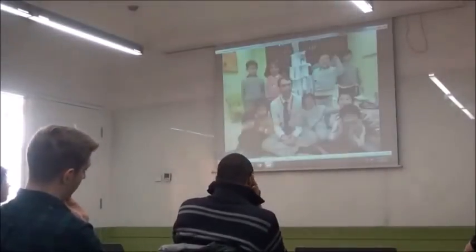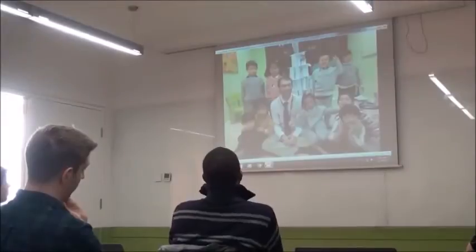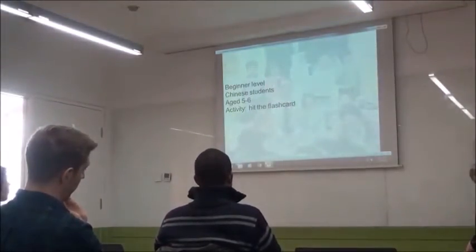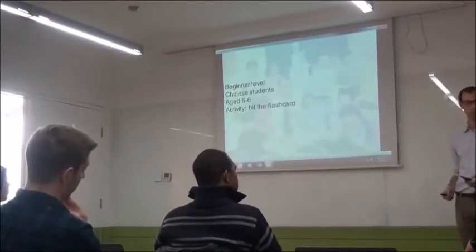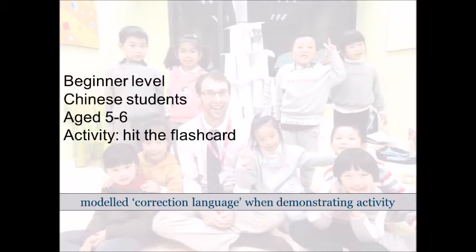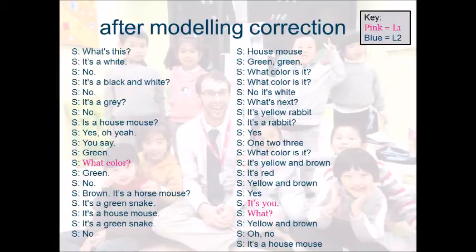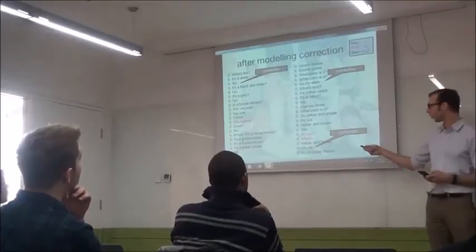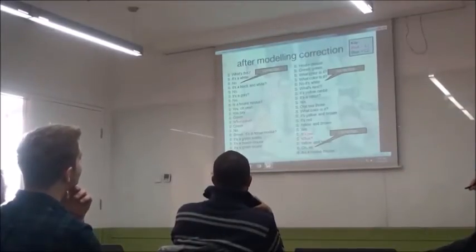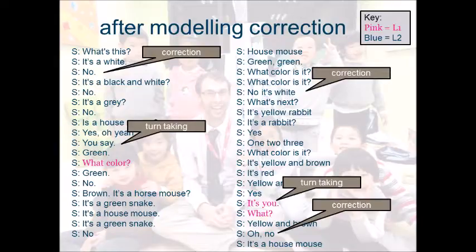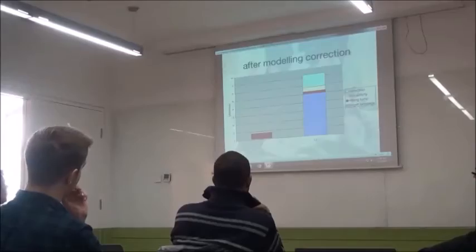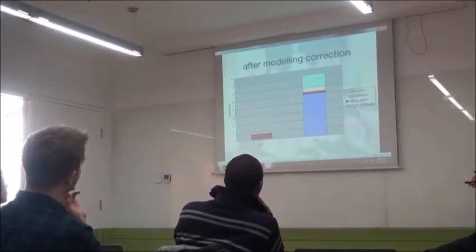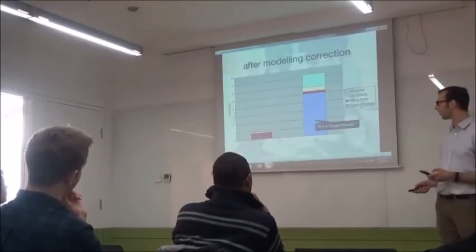In another class with the same group, I modelled some correction language — the simplest way to correct someone, which is just saying 'no'. In the recording, all the correction was done in English: 'No. What colour is it? It's white.' Some of the turn-taking was in English and some still in Chinese, but you could see a big difference from that first class where they were using a lot more Chinese overall.